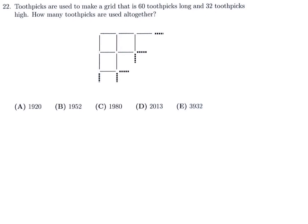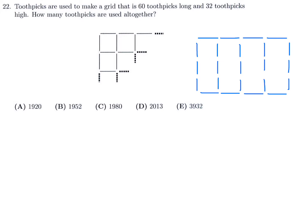Toothpicks are used to make a grid of 60 toothpicks long and 32 toothpicks high. How many toothpicks are used altogether? Let's talk about a simple example and then extrapolate. Instead of 60 and 32, let's use four and three. This can be drawn quickly, and because there are so few, we can discuss it. That same pattern we can then apply to the bigger question.